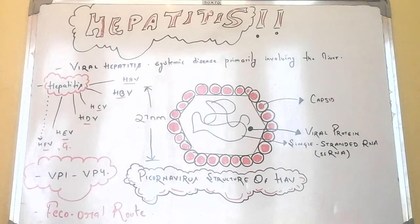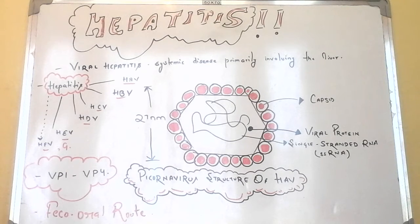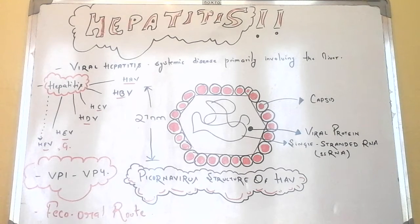Regarding pathogenesis, HAV is first ingested and probably enters the bloodstream through the oropharynx or epithelial lining of the intestine to reach its target. The virus can be localized by immunofluorescence in hepatocytes and Kupffer cells. The virus produced in these cells is released into the bile and from there into the stool.